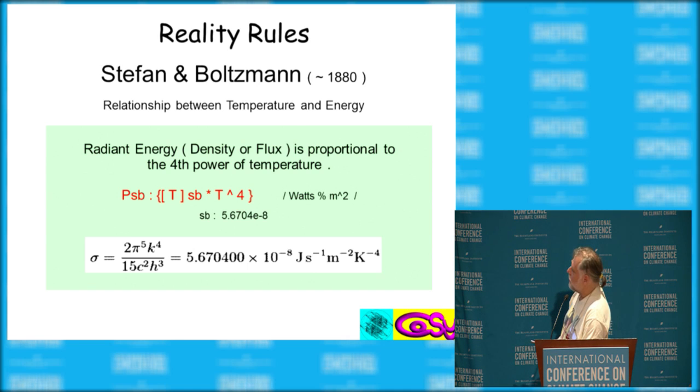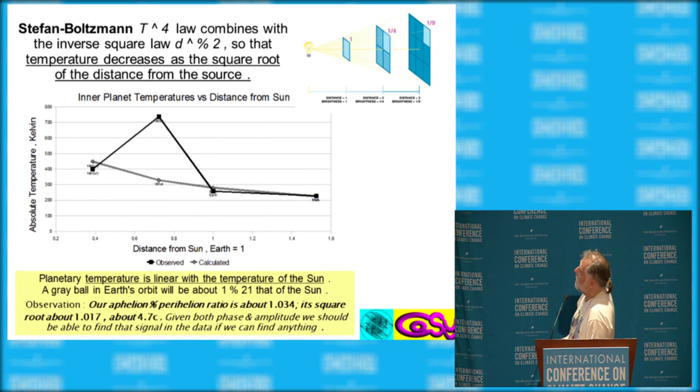That the relationship between temperature and power is T to the fourth, with a constant thrown in there that is really based on basic constants. That combines with the inverse square law to end up being an inverse square root law for the distance from the sun.